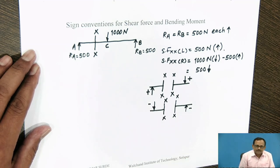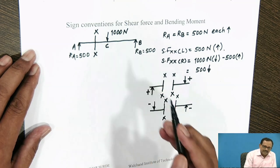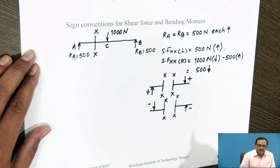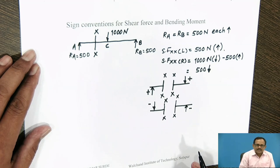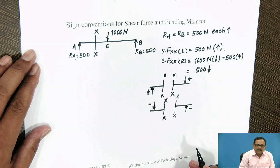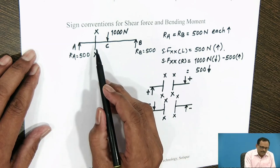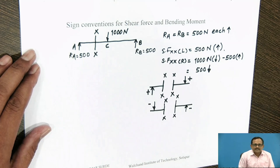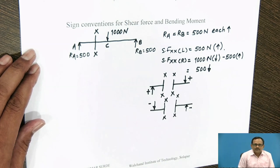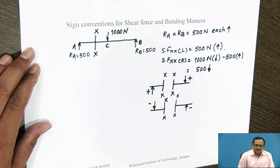Shear force at section XX is 500 N. Shear force is defined as the resultant of the forces and reactions acting on any part of the beam normal to the axis of the beam.